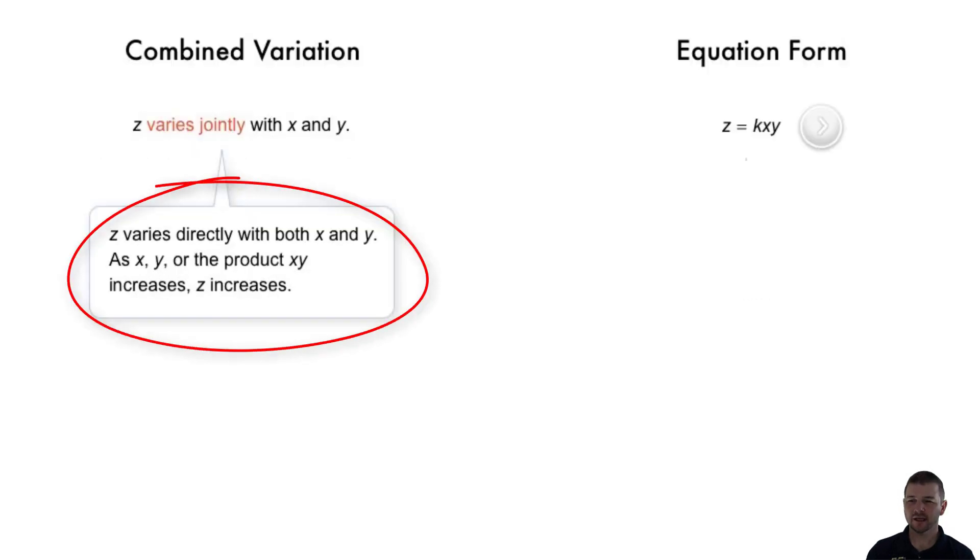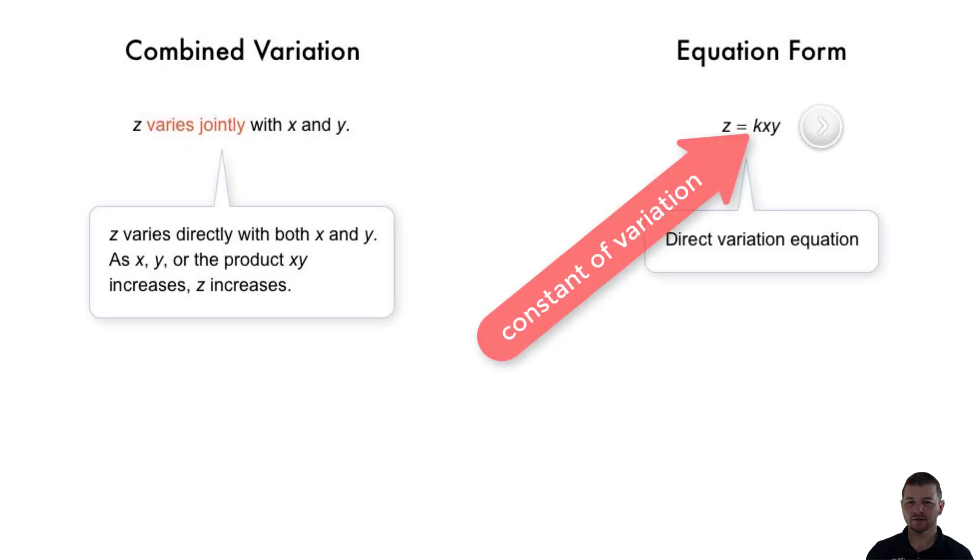Take note, z varies directly with both x and y. As x, y, or the product of x times y increases, z increases. Also note, k is the constant of variation and not a variable.